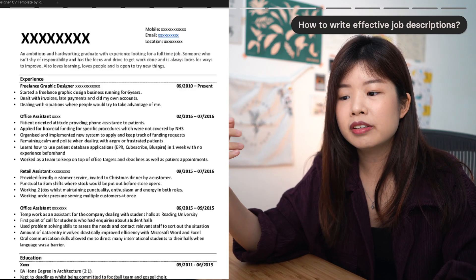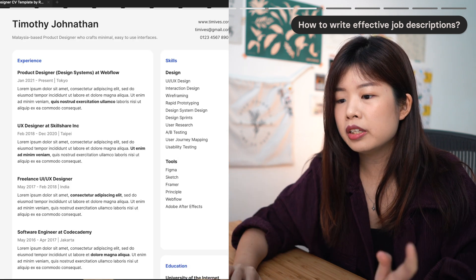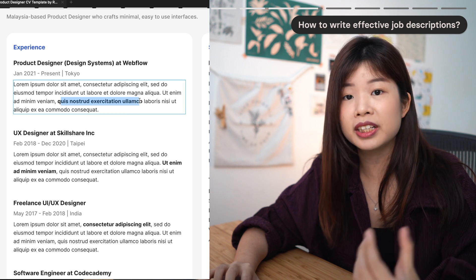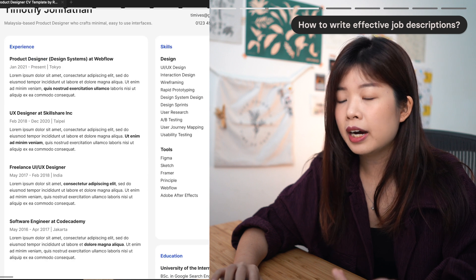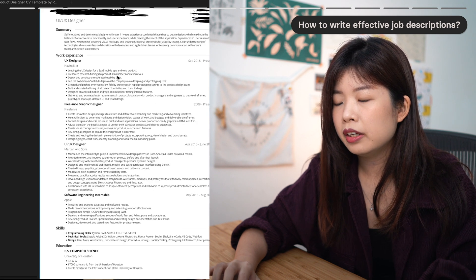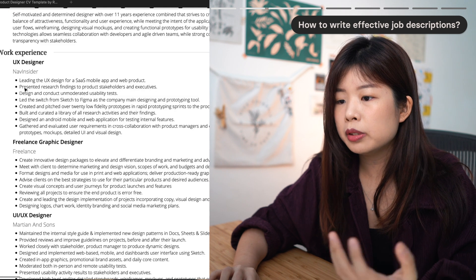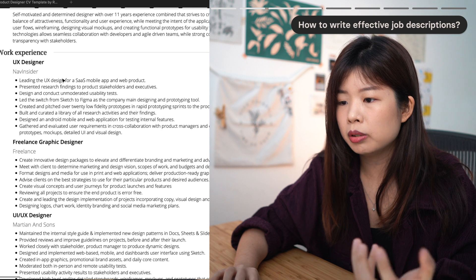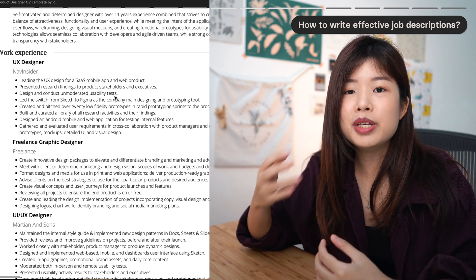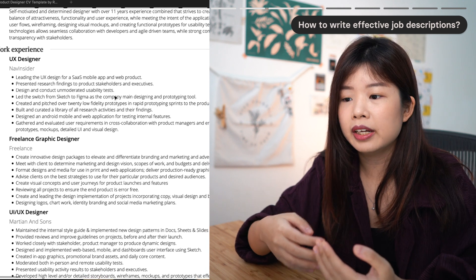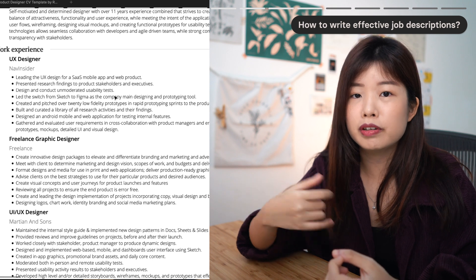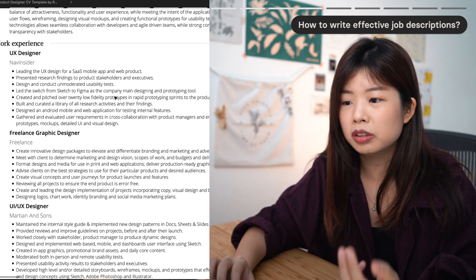In terms of length, keep it within 5 points. Recruiters will not read everything you write. Bold the points you think are most impactful—metrics or significant improvements—so that when recruiters scan your CV their eyes go straight to what they want to see. Looking at this CV, there are so many points but no clear impact. Presenting research findings to stakeholders is part of your job role. Instead, say you designed and conducted usability tests and as a result improved the product experience by 50%. That is much more useful to the recruiter.